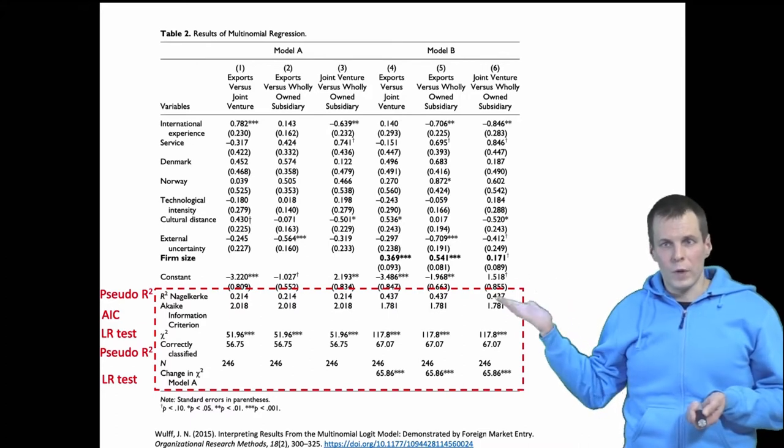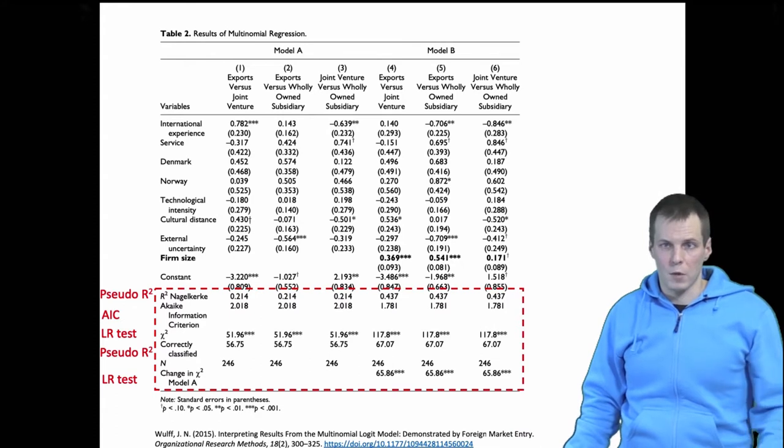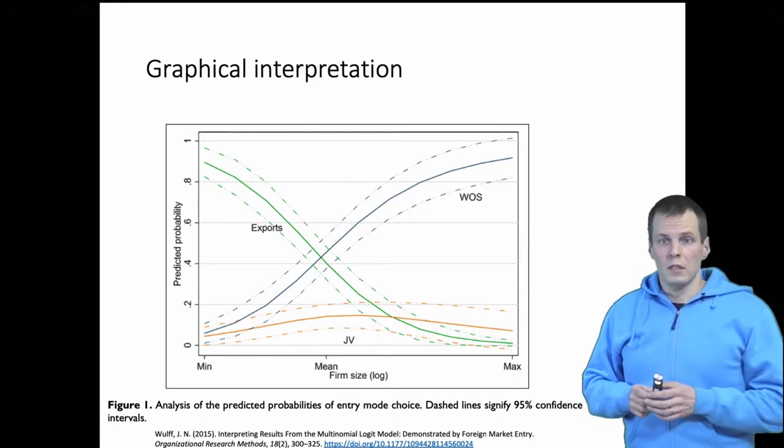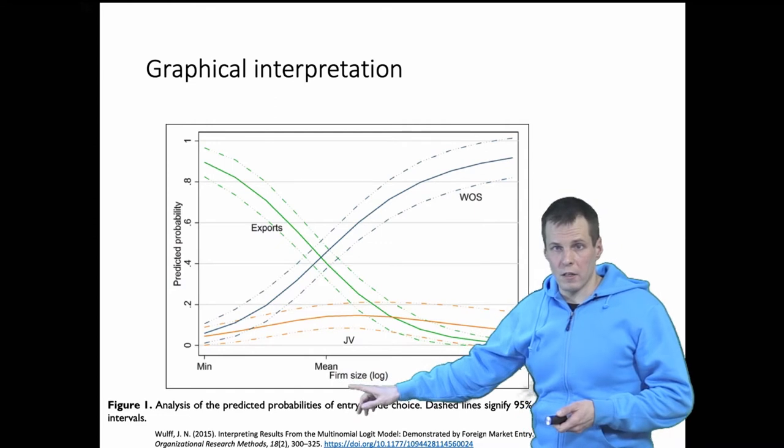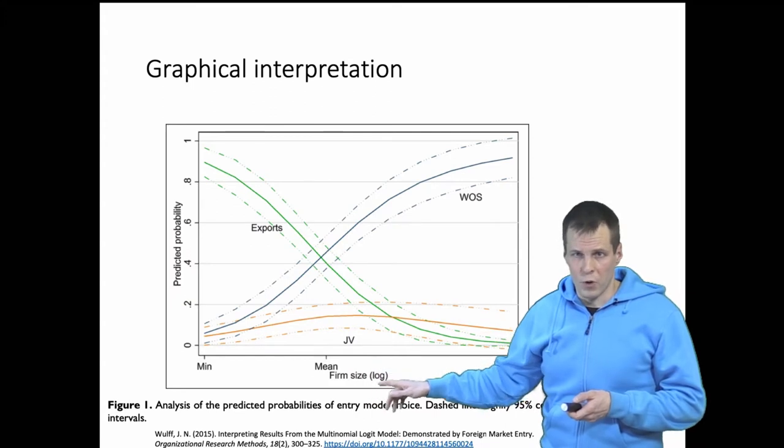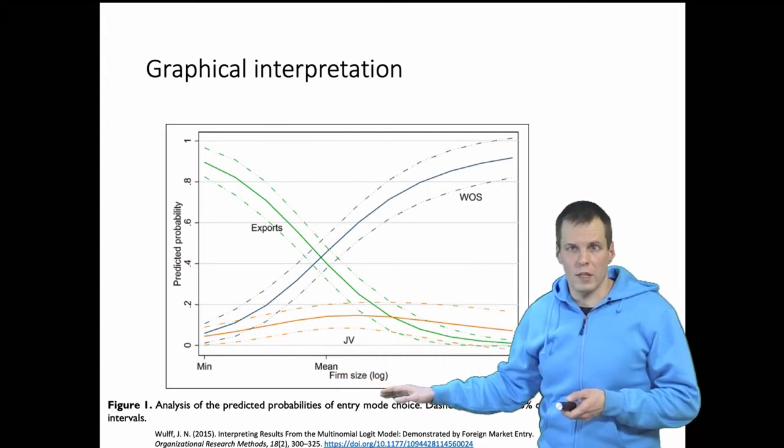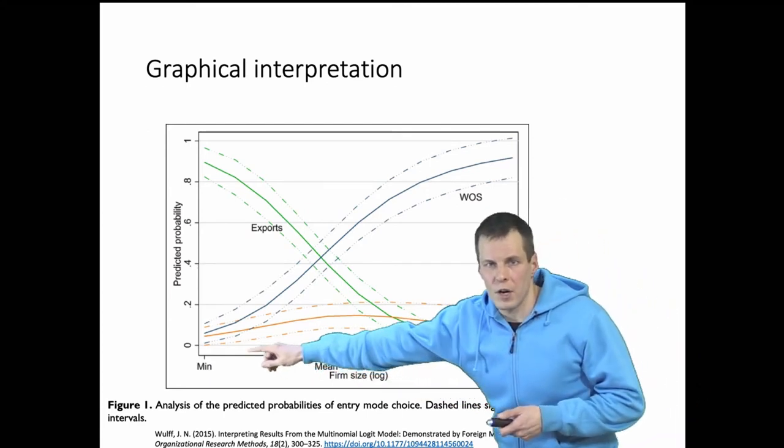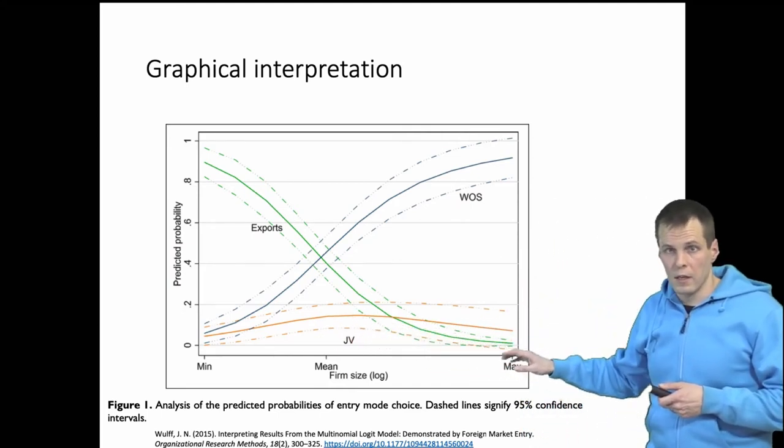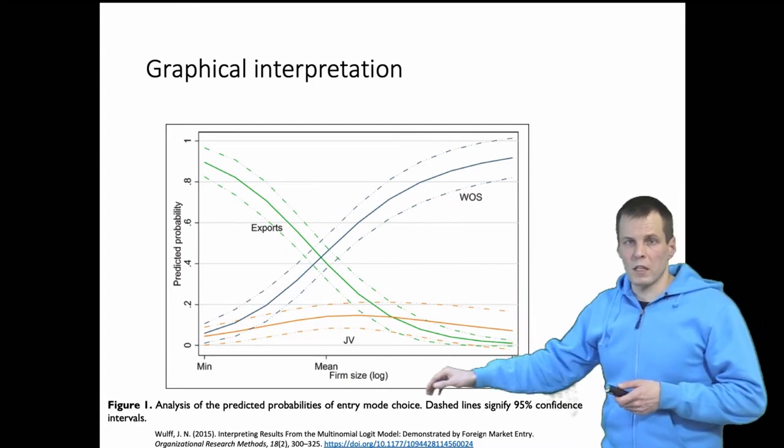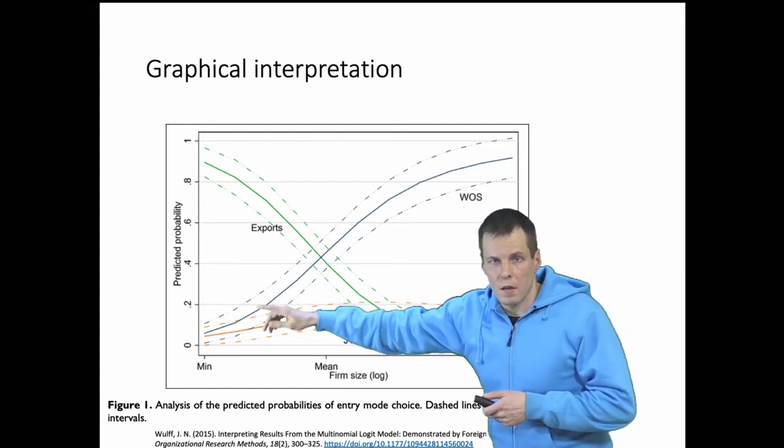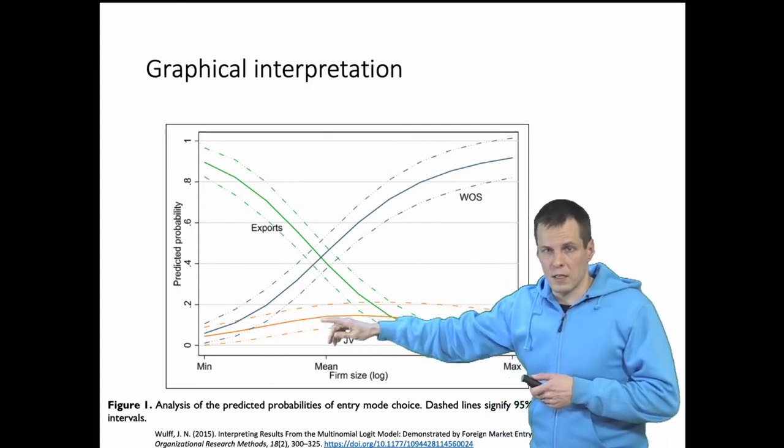The way to interpret these models is by plotting, and this paper shows a really nice way of plotting the data. You choose some set of interesting variables that you hold constant and then you vary one variable. For example, here the firm size, which is their interesting variable. They have logged it - I would have preferred to have the raw metric, but you can do it that way as well. Then you look at how the predictive probability for each category changes when we change the value of firm size holding everything constant.